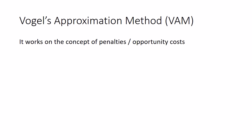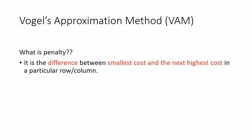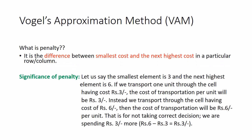Let's see what this new method has different than the previous two. It works on the concept of penalties, also known as opportunity costs. The penalty is the difference between the smallest cost and the next highest cost in a particular row or column. Vogel's Method does not only focus on the smallest cost — it also takes into consideration the difference between the smallest and the next highest cost.